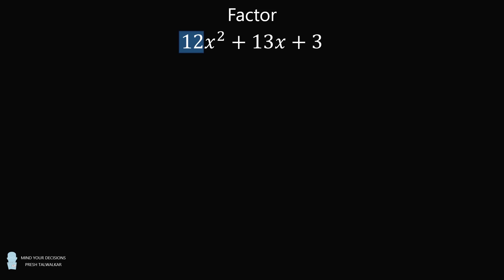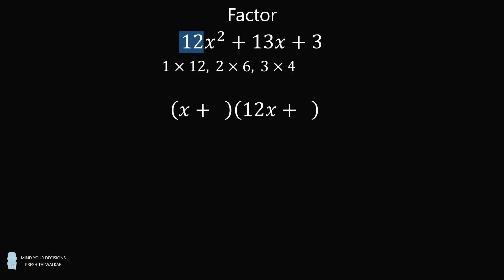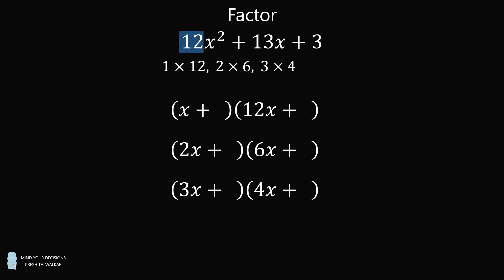Let's consider the ways that two factors can multiply to be 12. We have three possibilities: 1×12, 2×6, and 3×4. These possibilities lead to three different ways that we could factor the trinomial. It will be tedious to check all of the different possibilities. But don't worry, there is a wonderful trick to solve this much quicker.